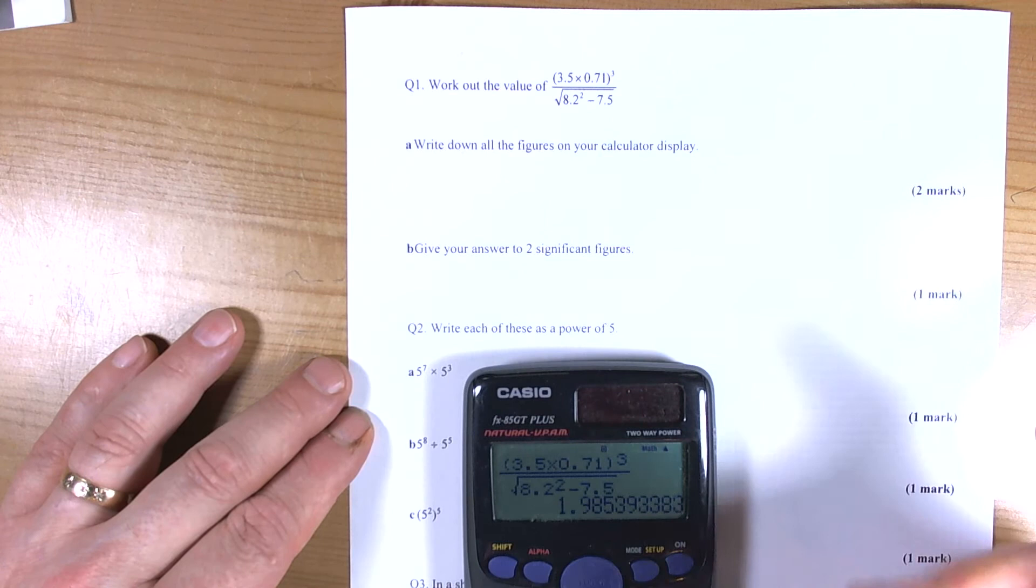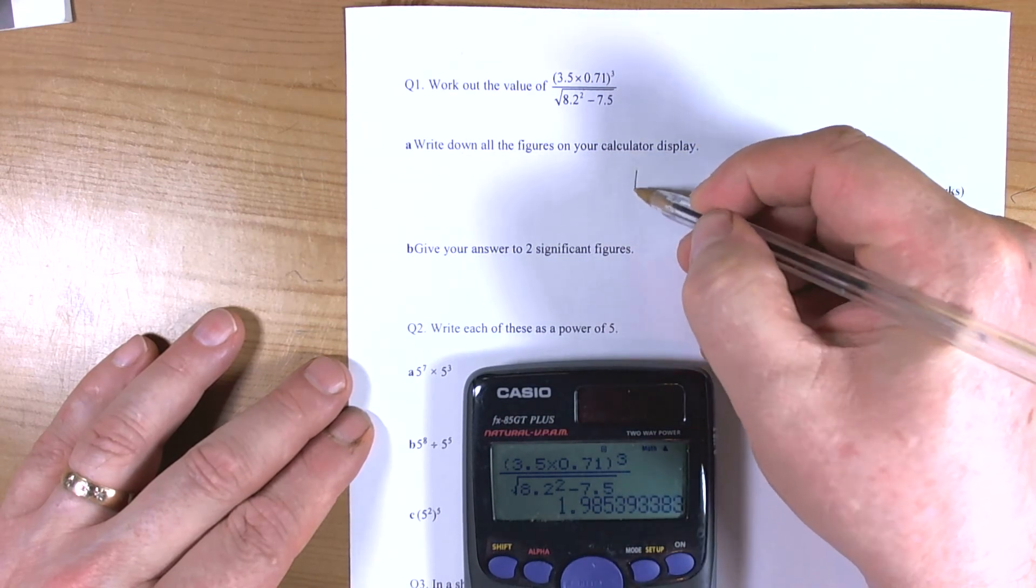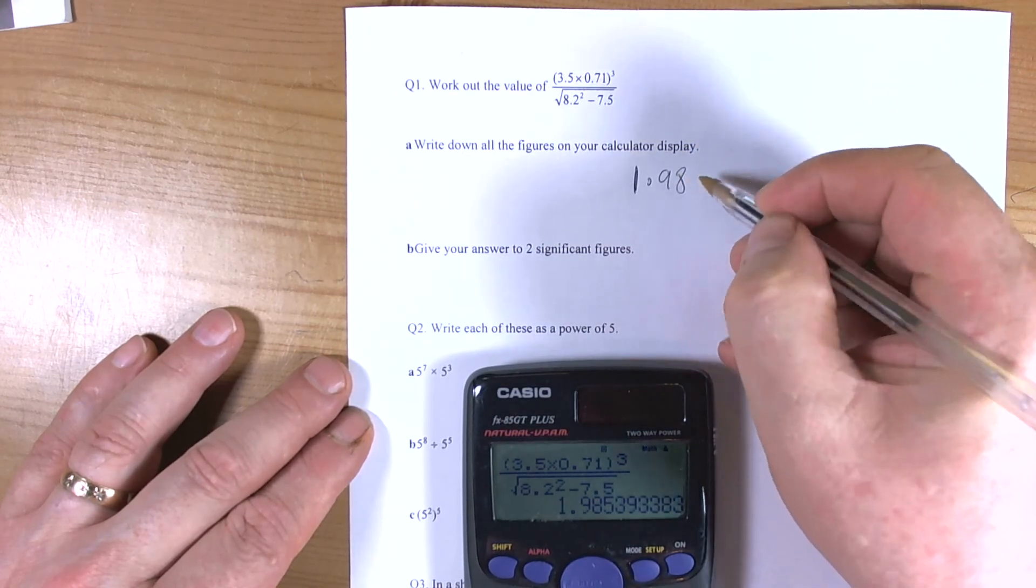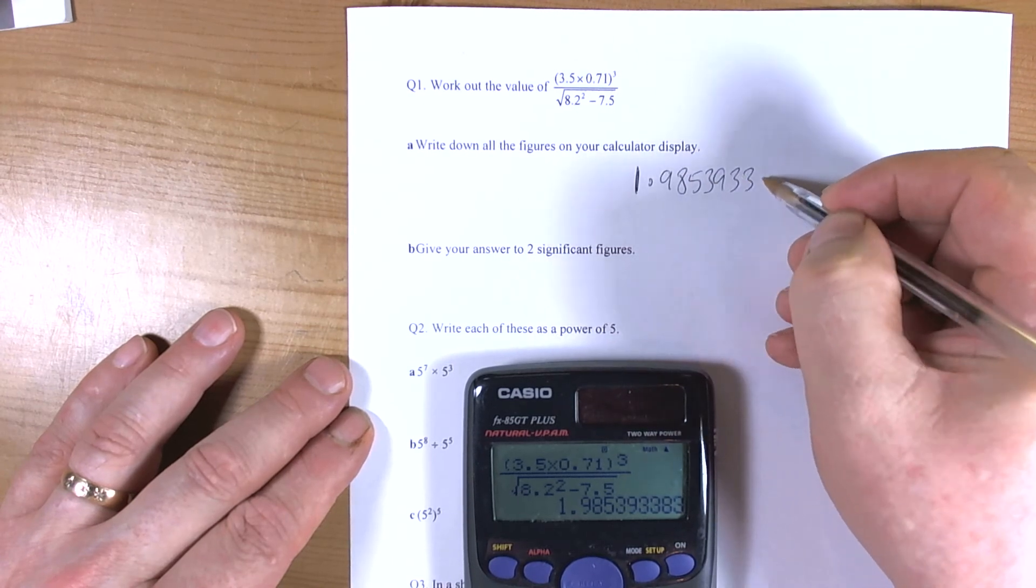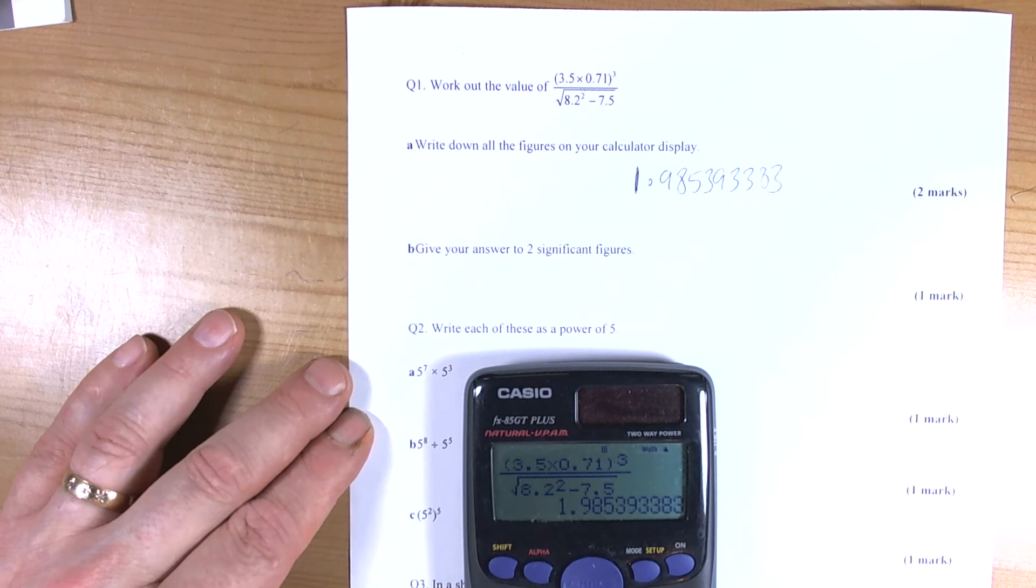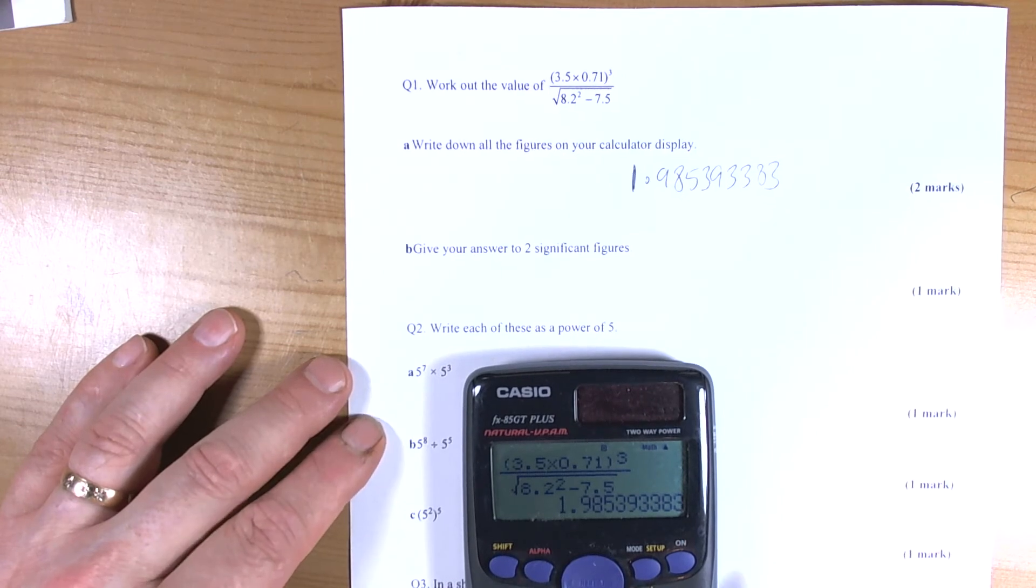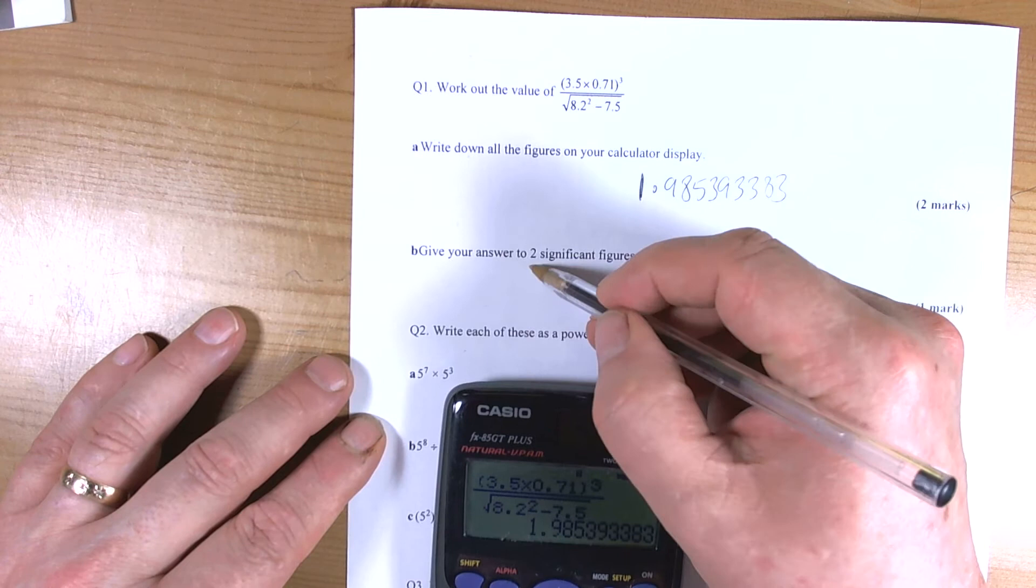Ok so it says write down all the figures on your display so make sure you follow the instructions. So 1.985393383. It then says round your answer to 3 significant figures, sorry 2 significant figures.